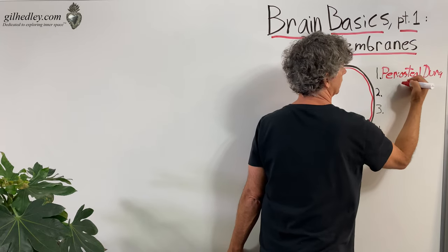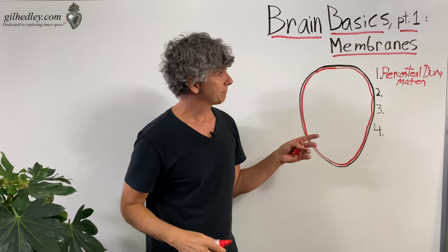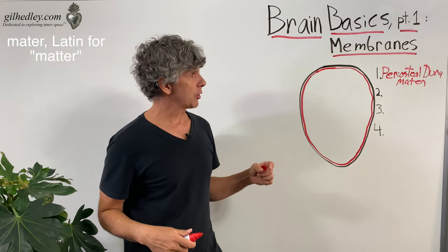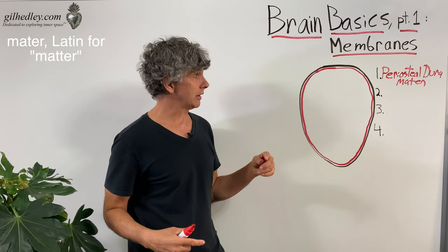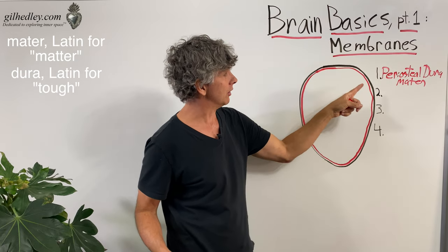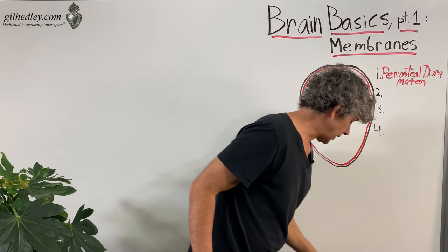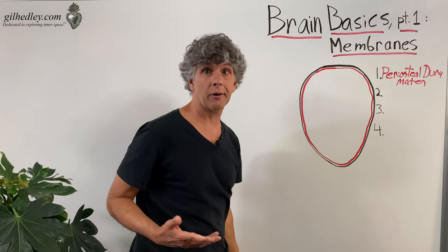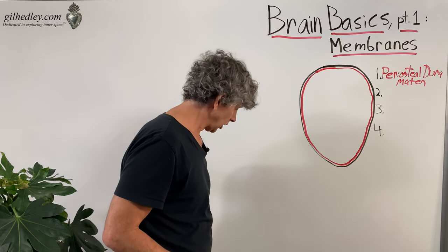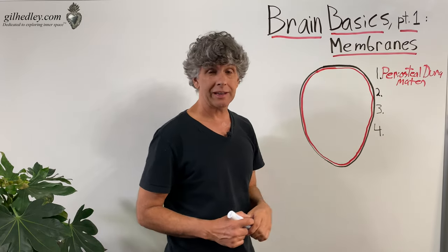We use the word 'mater' when speaking of the meninges, and mater just means matter or stuff. So the periosteal dura mater is the tough, durable stuff lining the skull. There's also another layer of the dura mater, and it took me a while to understand this — I don't know why, I should have just read a book.